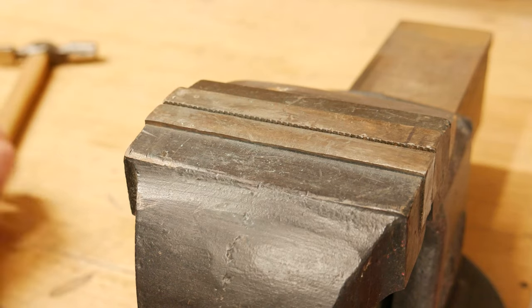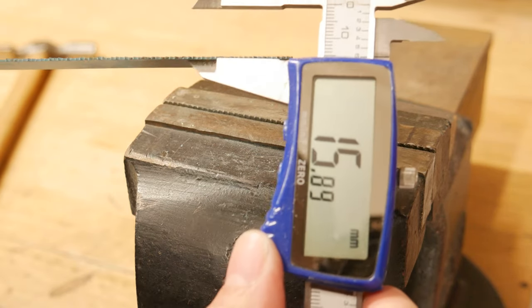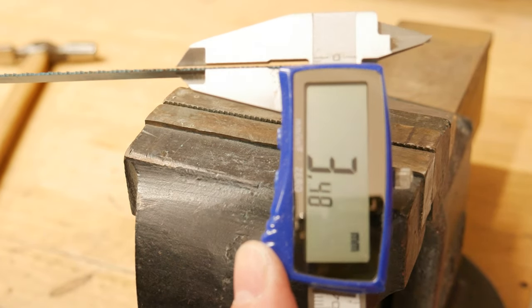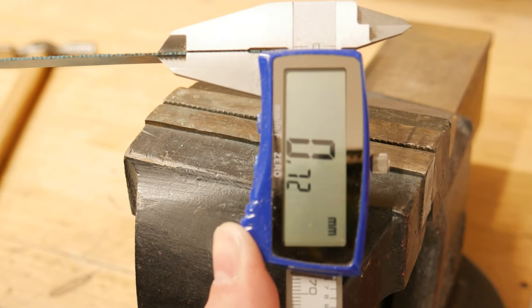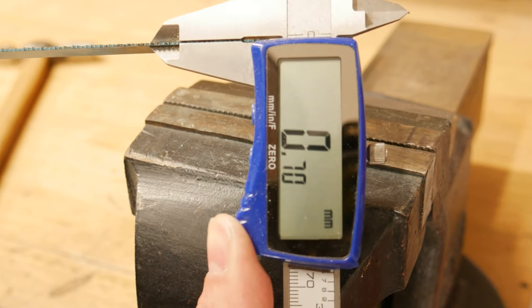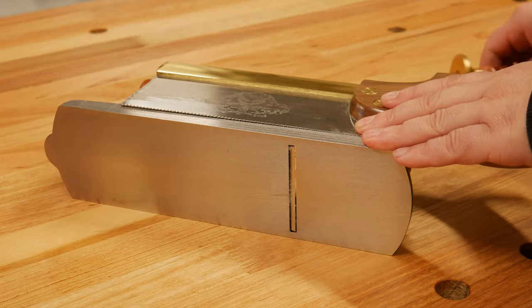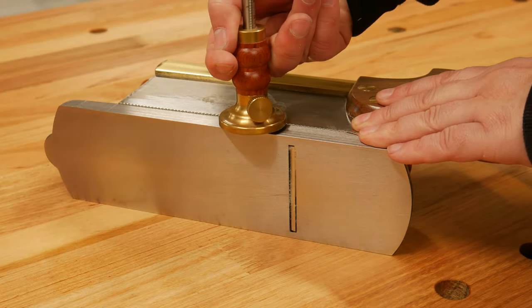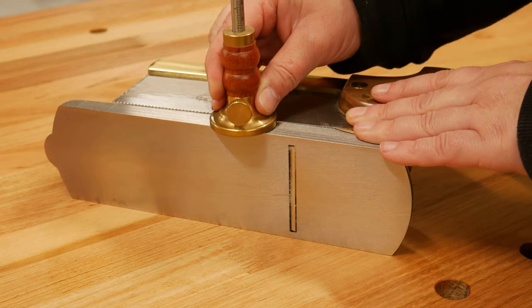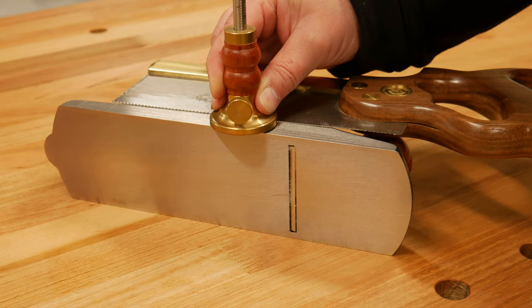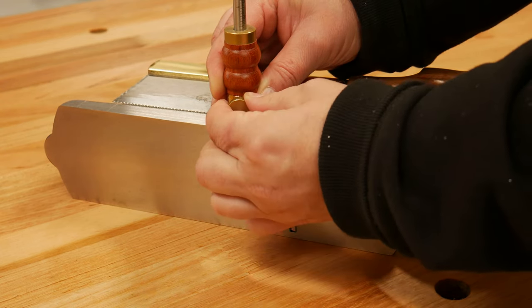Now we can get back to the dovetailing and credit where credit is due, this is the unique Cosman dovetailing method. To start out you set your marking gauge to the thickness of the saw's kerf. I prefer to use feeler gauges matching the kerf's thickness. I find it more stable to get a reading.